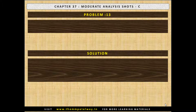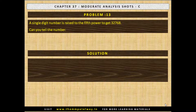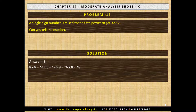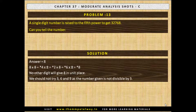Problem No. 13. A single digit number is raised to the fifth power to get 32,768. Can you tell the number? The solution is the number is 8: 8×8=64, 64×8=512, 512×8=4096, 4096×8=32768. No other digit will give 8 in the unit place. We should not try 3, 6 or 9 as the given number is not divisible by 3.